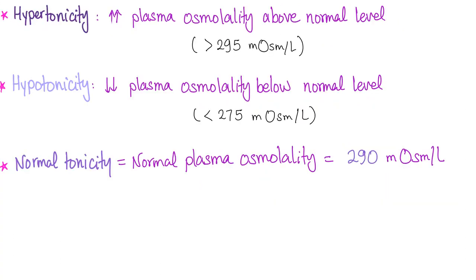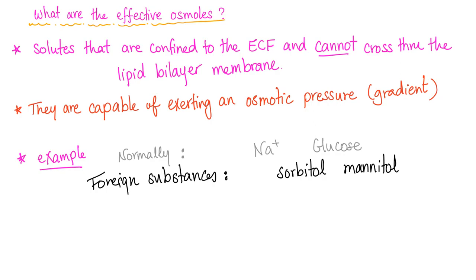Here are the three definitions: hypertonic, if your osmolality is greater than that of the plasma; hypotonic, if your osmolality is less than that of the plasma; and normal tonicity when your osmolality equals that of the plasma. Effective osmols are solutes confined to the ECF that cannot cross the lipid bilayer membrane — therefore they are capable of exerting osmotic pressure, creating an osmotic gradient, and causing water flow.